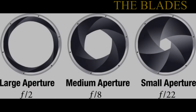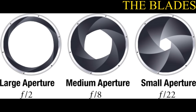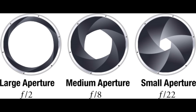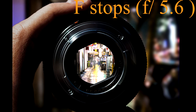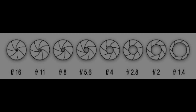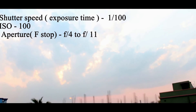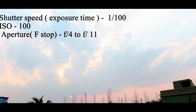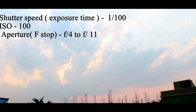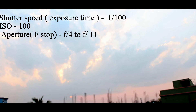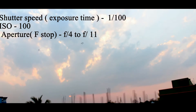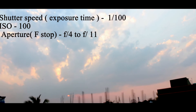Aperture refers to the opening of a lens's diaphragm through which light passes and enters your camera. It is calibrated in f-stops and is generally written as numbers such as 1.4, 2, 2.8, 4, 5.6, 8, 11, 16, and so on. The lower f-stops give more exposure because they represent larger apertures, while the higher f-stops give less exposure because they represent smaller apertures, as shown in this clip.